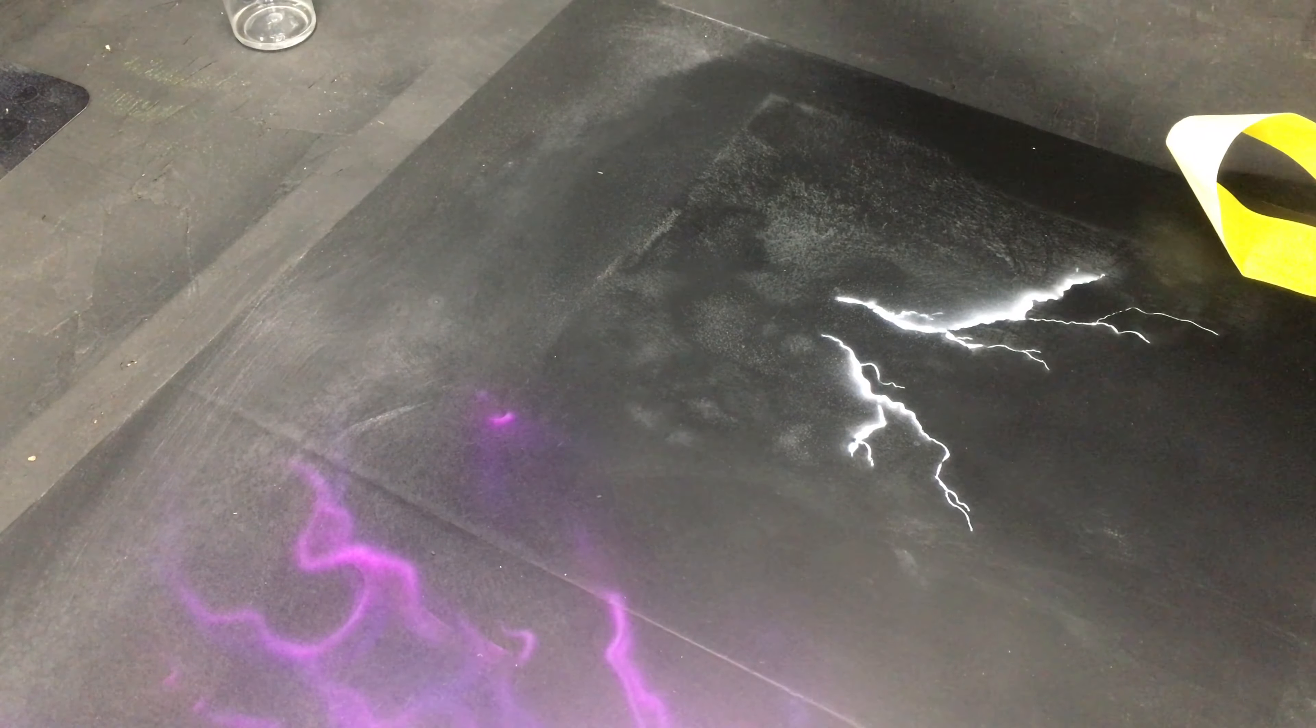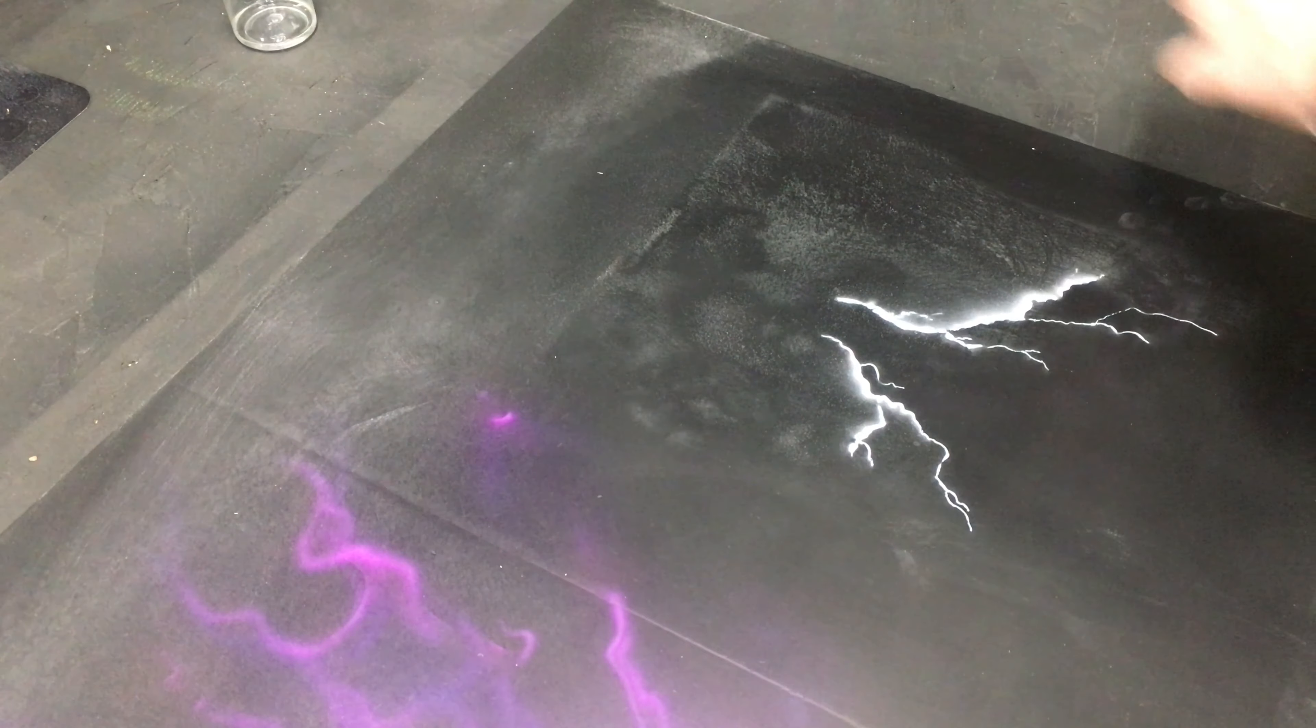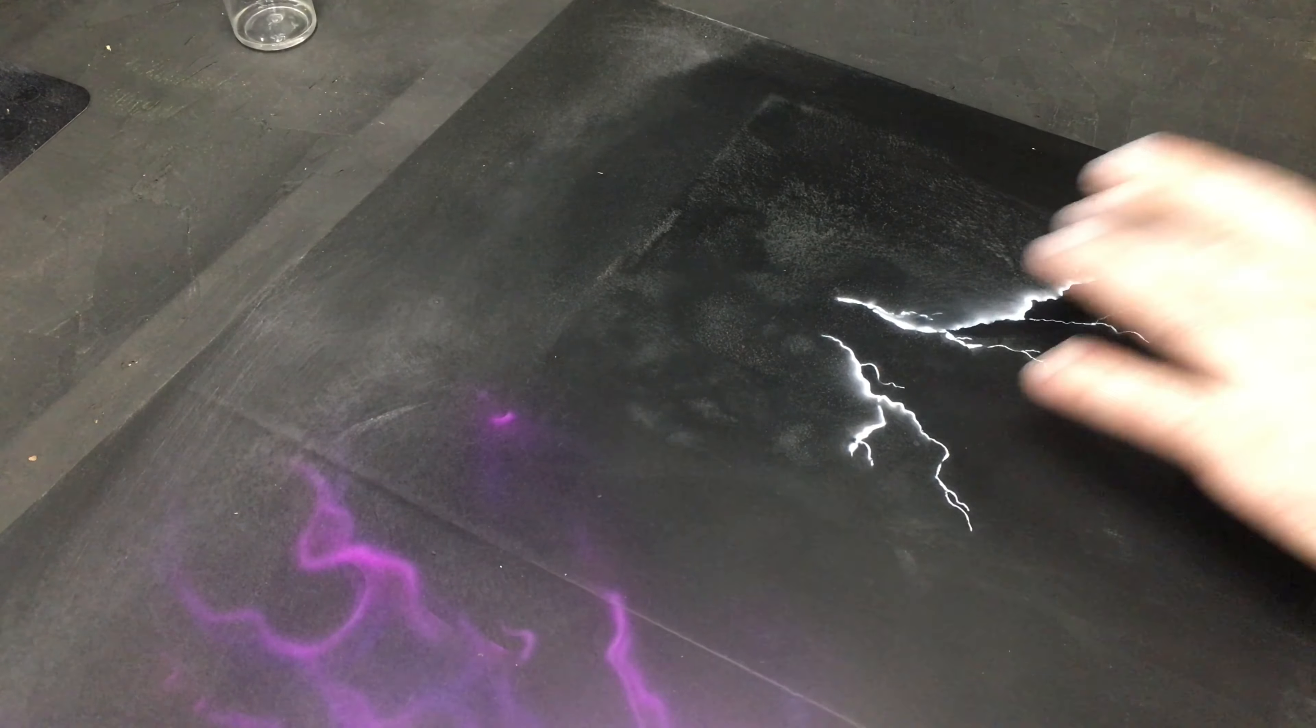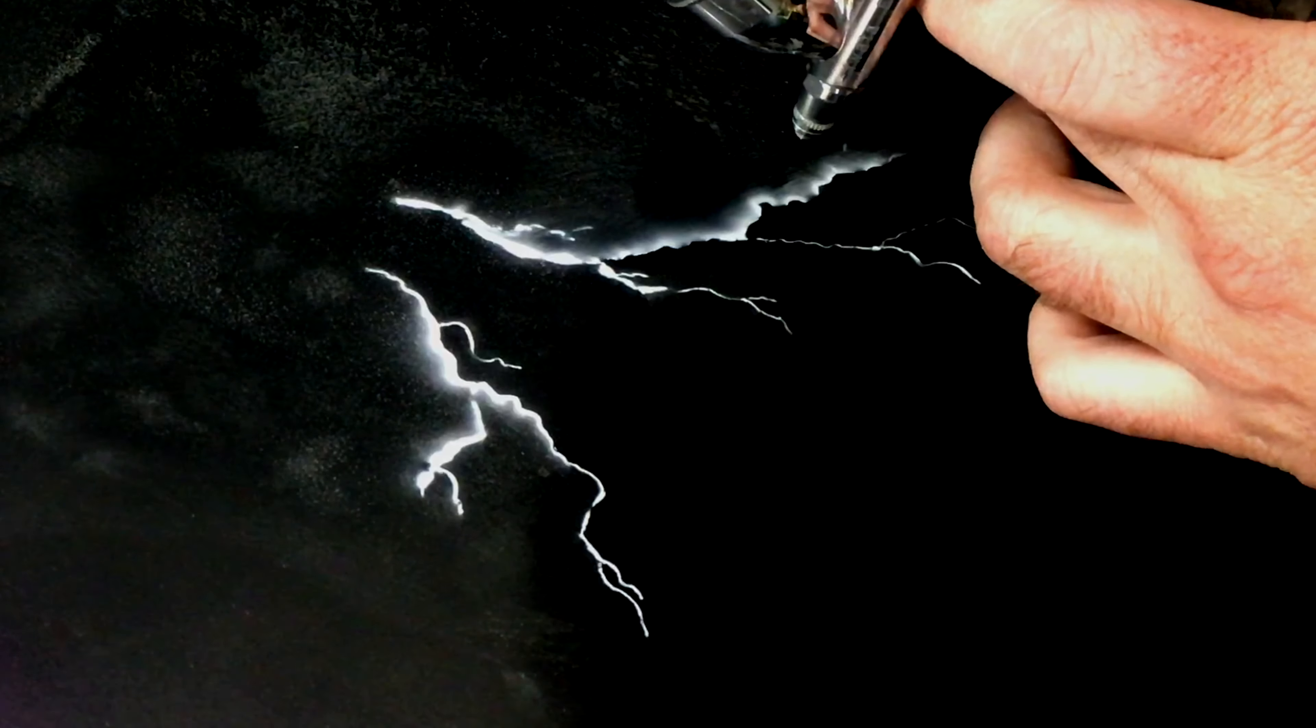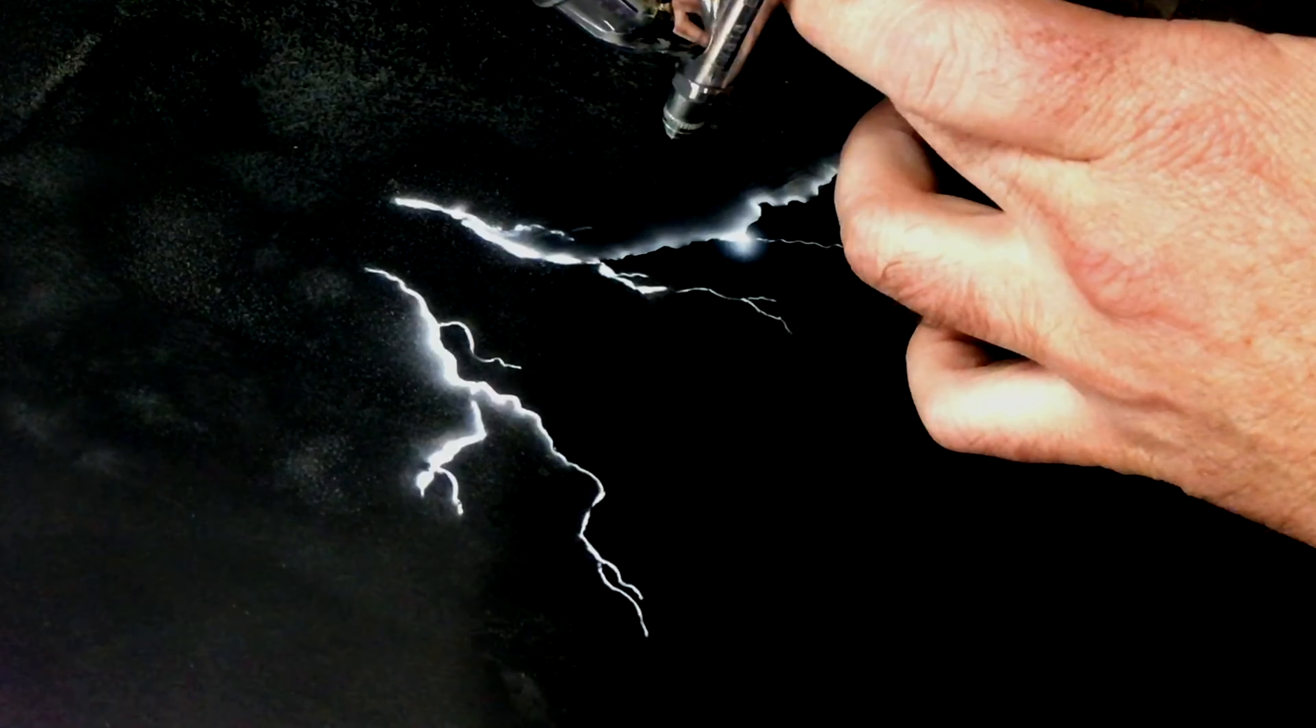Once you're finished, you just peel up your stencil. You see here a little bit of overspray shot up underneath there. A lot of this will go away when we clear. You also can wipe it off. If you hold your stencil down a little better than I did, you won't have this problem.